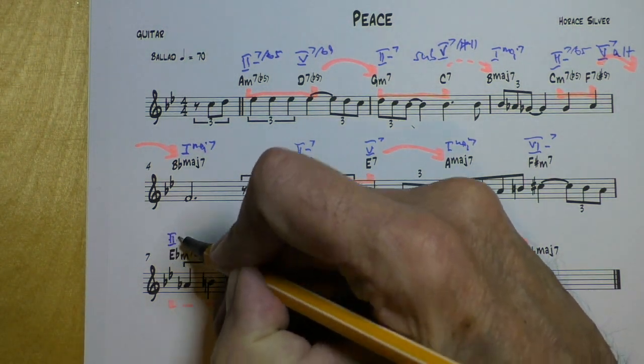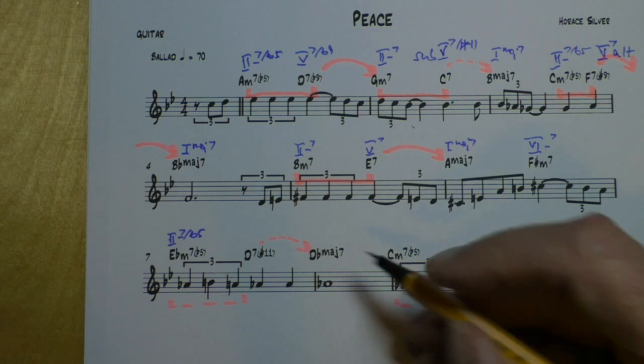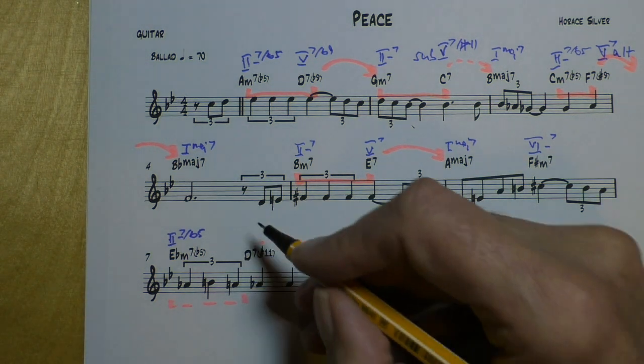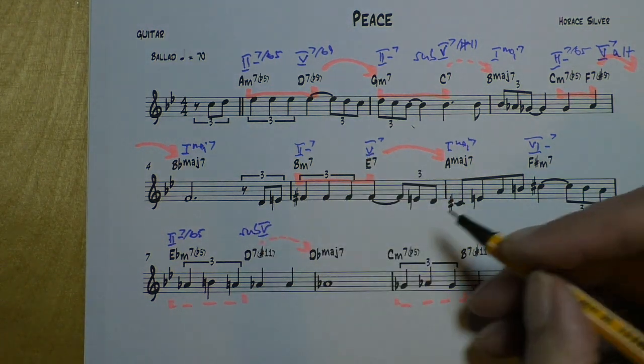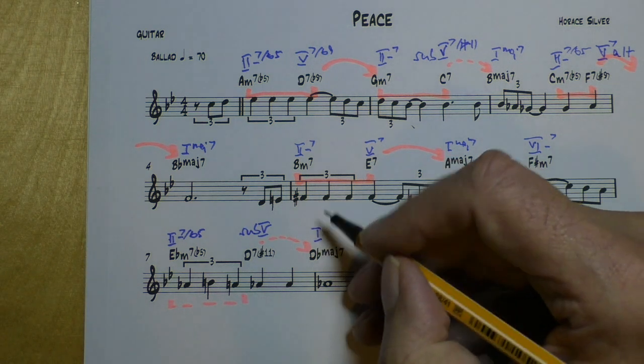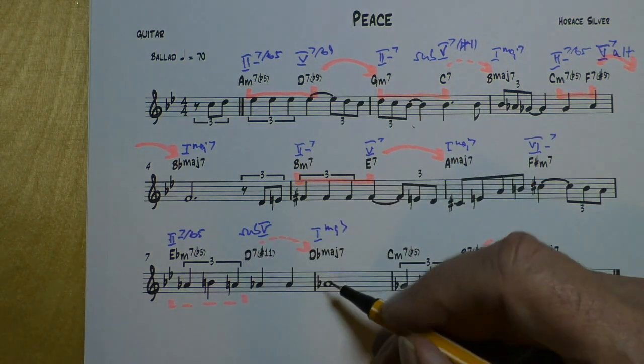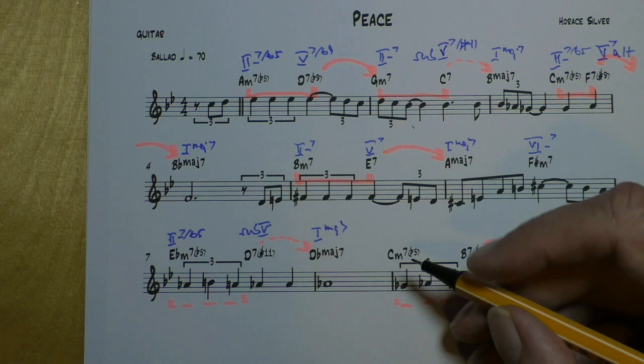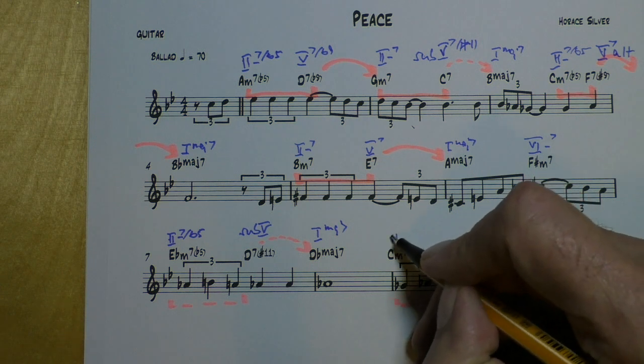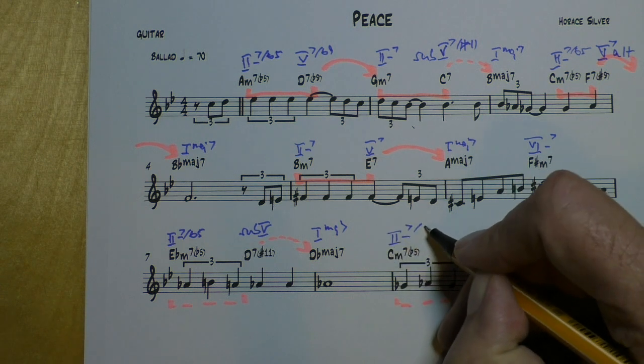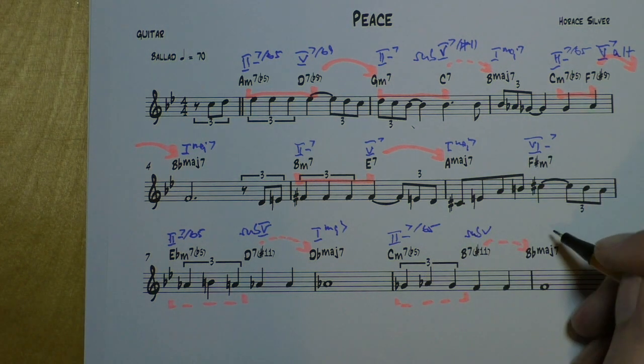That's a 2-7b5. The 2 of a minor progression. That's the sub-5 again. And that's a 1 major 7. The sub-5 is always a half step above the root, above the tonic. Again, same thing here, just a 3rd below. So, 2-7b5, sub-5, 1 major 7.